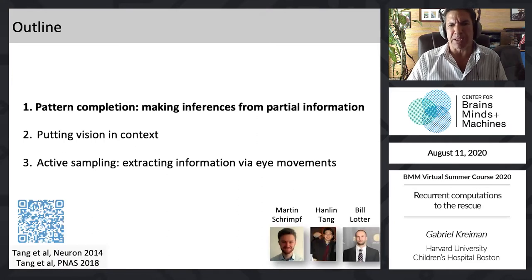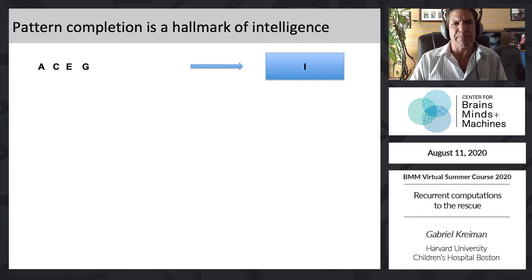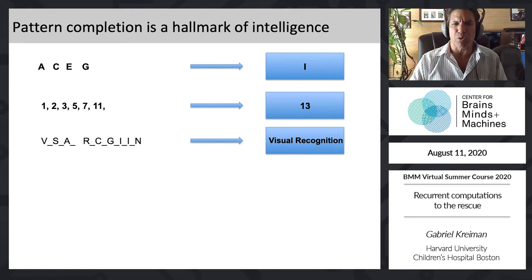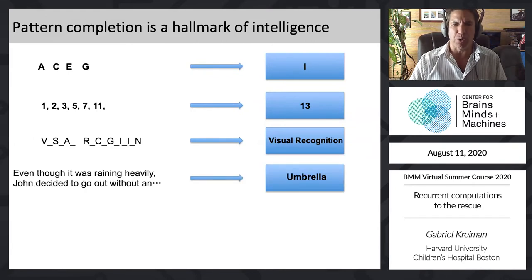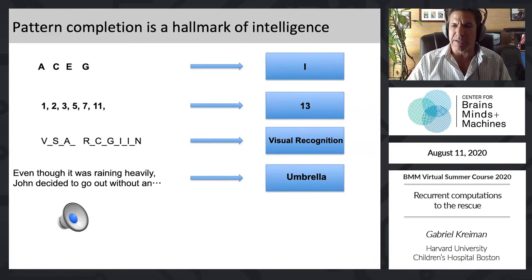I'll argue that pattern completion is the hallmark of intelligence — it happens continuously as we make inferences from partial information. Here's a sequence of letters and you can infer the next one; a sequence of numbers and you can complete it. We can complete partial sentences like 'even though it was raining heavily, John decided to go out without...' — umbrella. This is not restricted to logic or vision; it happens in music as well.